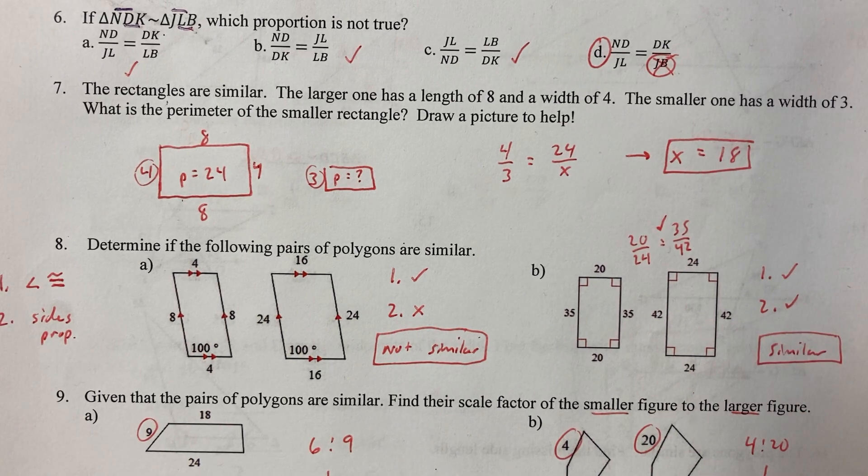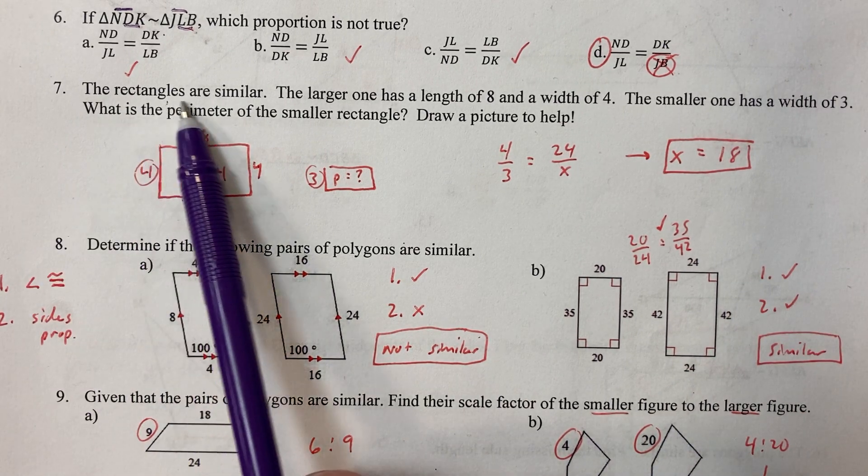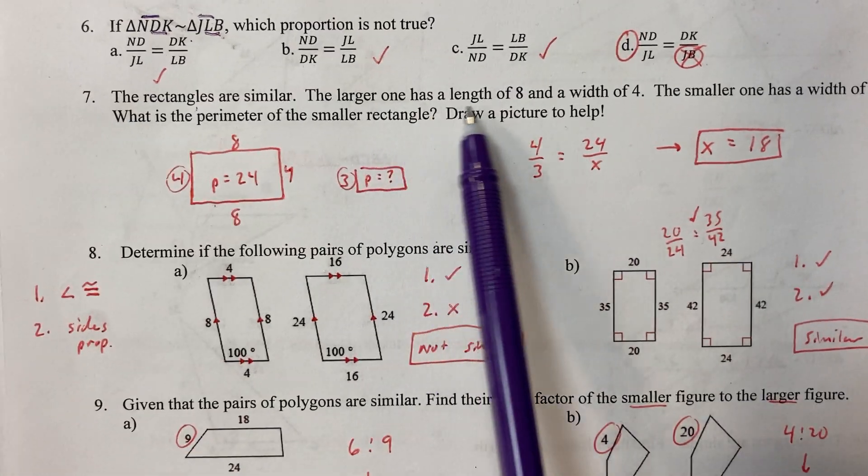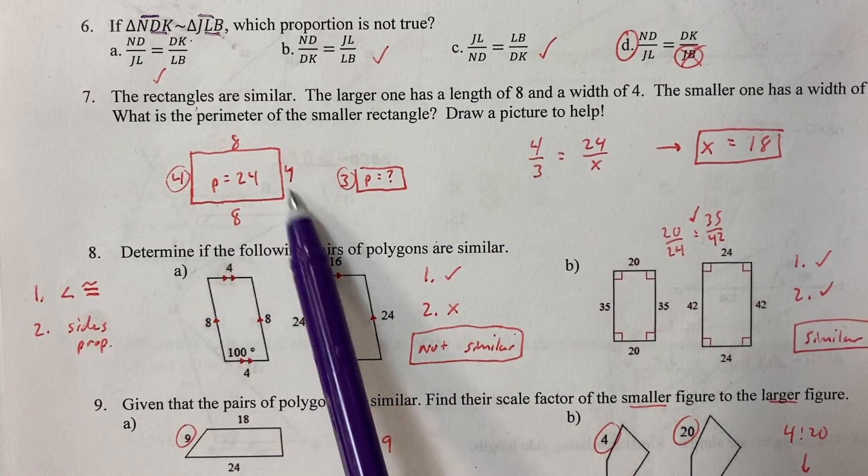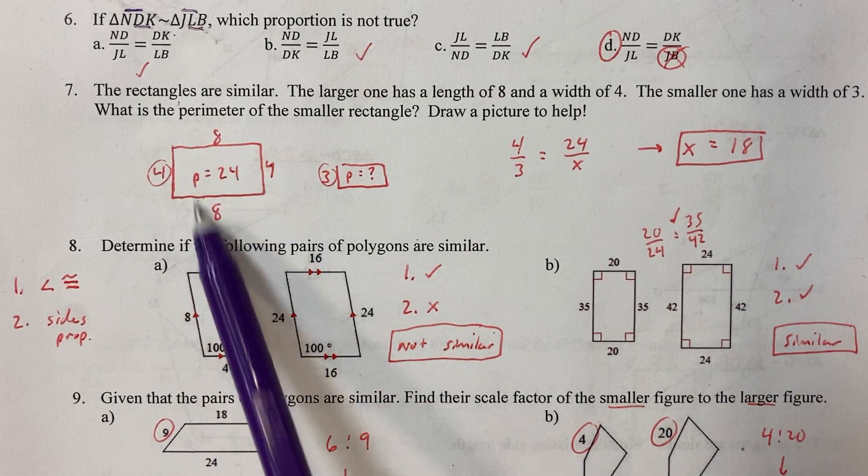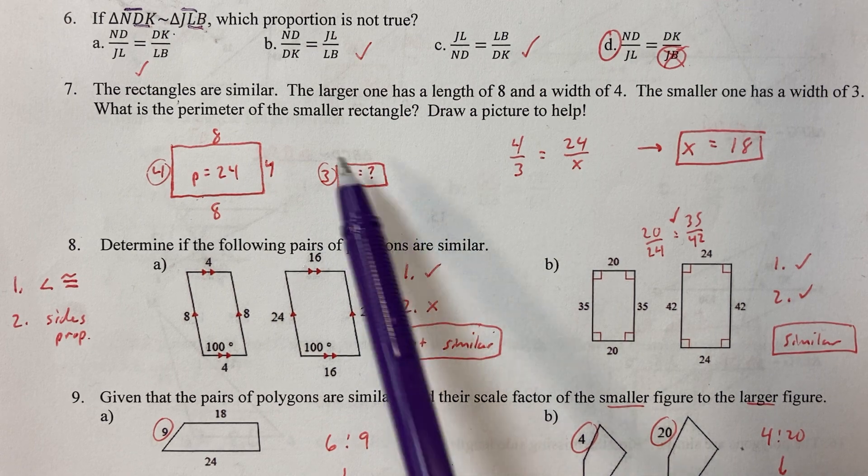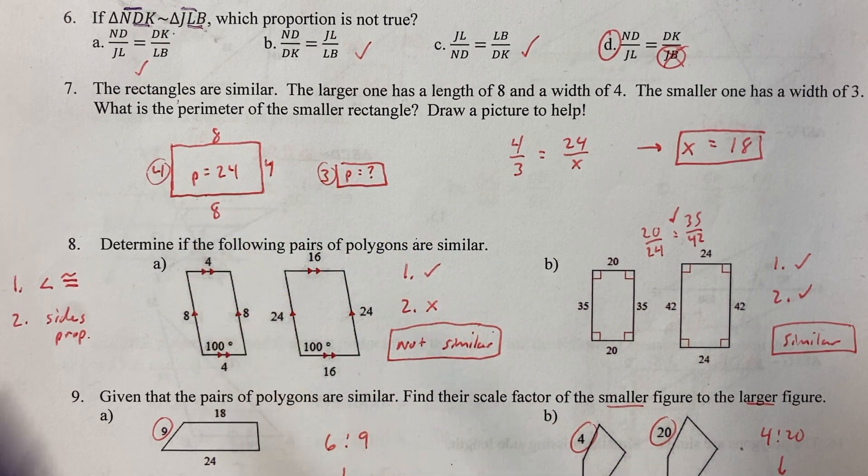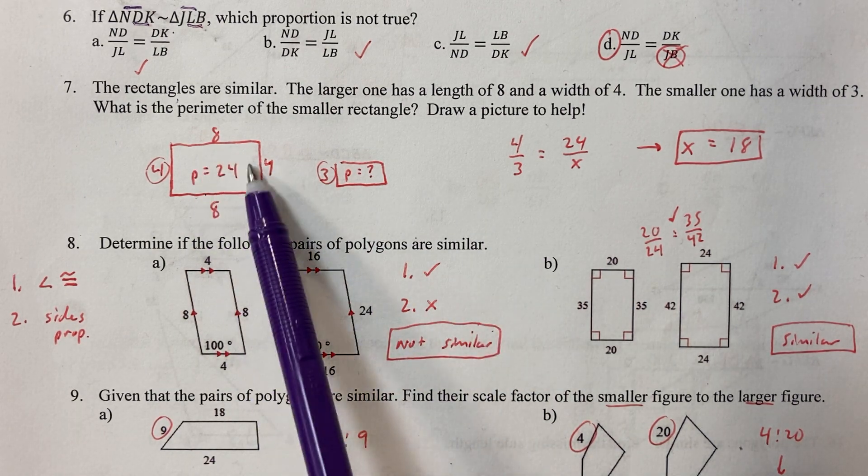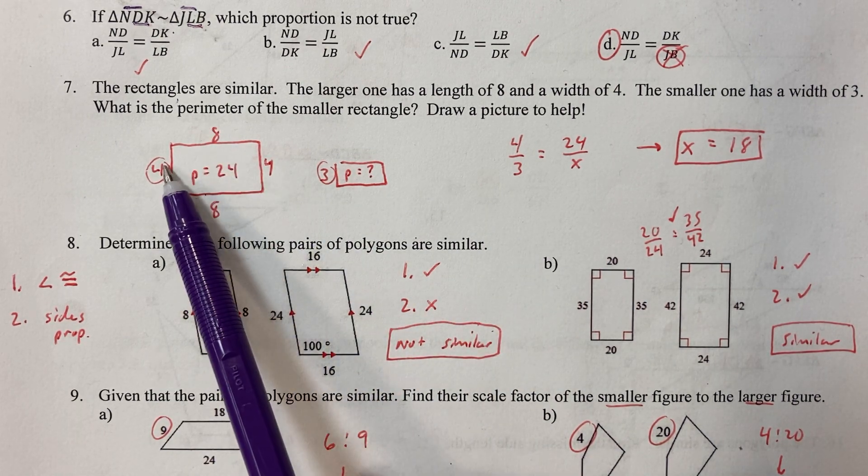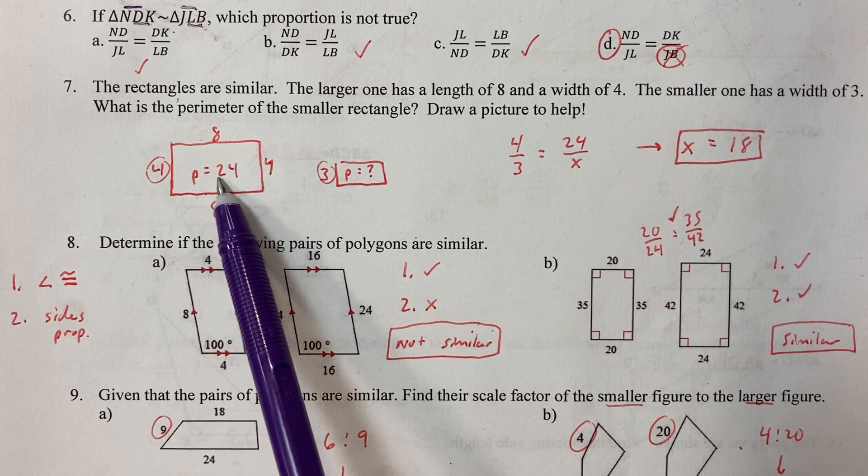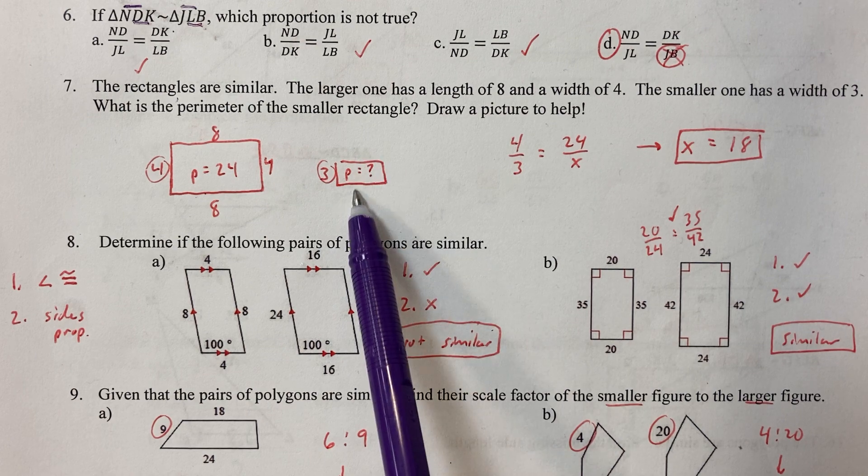Number seven. The rectangles are similar. So I'm going to set up two similar looking rectangles. The larger one is a length of eight and a width of four. The smaller one has a width of three. Make sure you put the widths together. And I matched up my lengths. Now, the perimeter of this one is easy, but the perimeter of this one, we don't know because we don't know what the sides are.